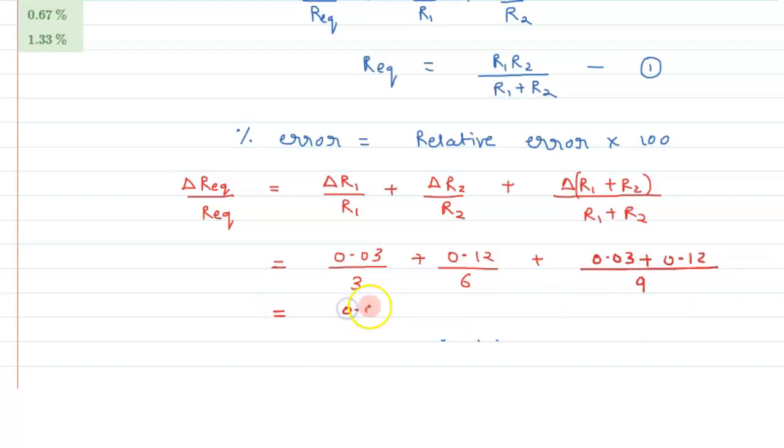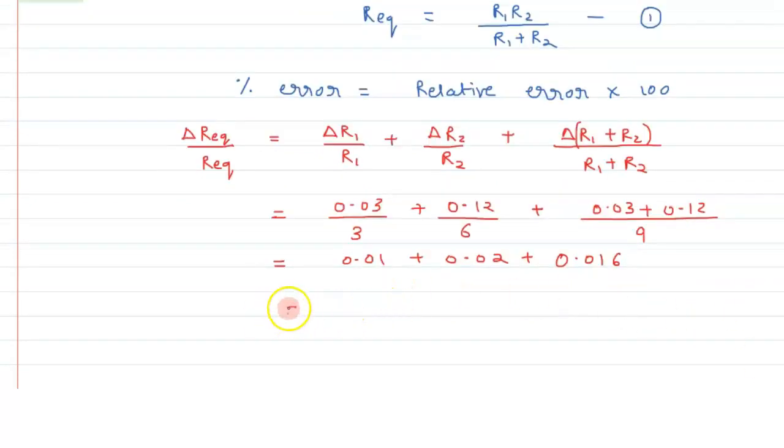So here it comes out to be 0.01 plus 0.02 plus this value is 0.15 divided by 9, so this value comes out to be 0.016, and after solving this value we can get the total relative error as 0.046.